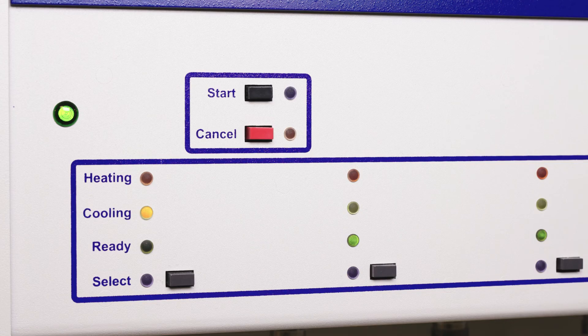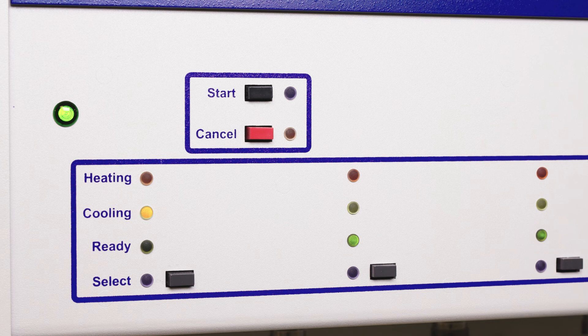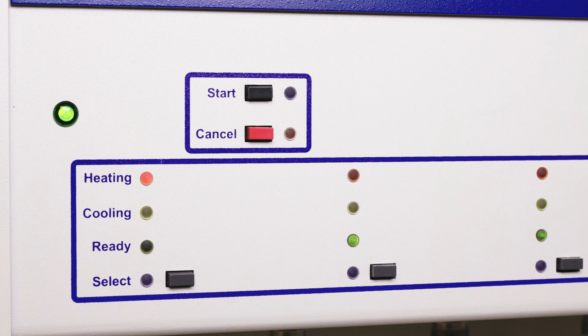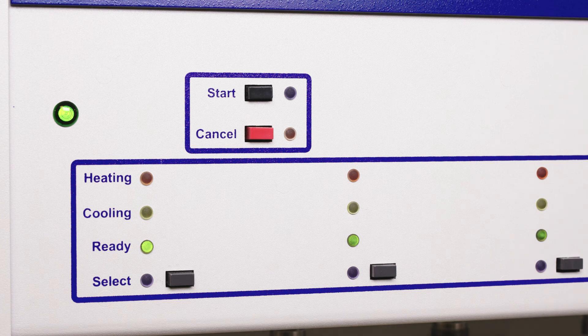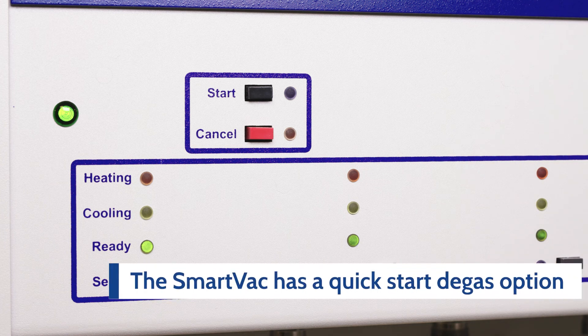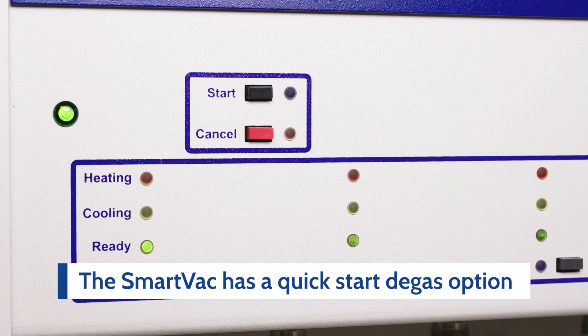On the SmartVacPrep, there are also lights to indicate the status of degas. The orange light blinks when evacuating and cooling and the red light when ramping and degassing. Once the sample tube is cooled down, the green light will be on to indicate the degas is complete.